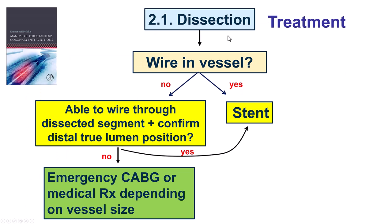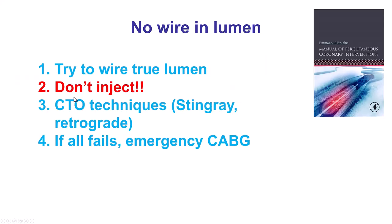How do we specifically treat dissection? It depends on whether we have a wire in the vessel or whether we can get a wire into the vessel. The solution for acute treatment of dissection is to place a stent, but the problem is what to do if we cannot get a wire into the vessel — this may require emergency coronary bypass graft surgery. The first step is to try to wire the true lumen, minimizing injections because they can worsen the dissection. CTO techniques such as ADR with Stingray or using a retrograde approach can help advance a guidewire into the distal true lumen. If everything fails and this is a significant vessel — which it was in our case — then emergency CABG may be needed.